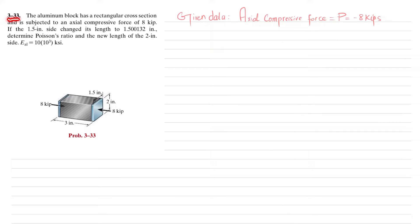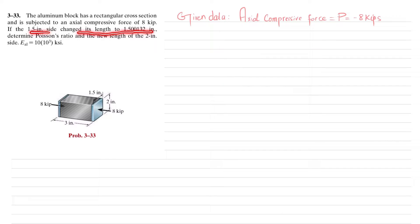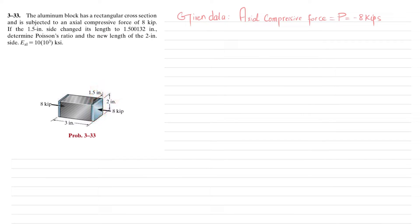Welcome back, problem 3.3. An aluminum block has a rectangular cross section and is subjected to an axial compressive force of 8 kips. If the 1.5-inch side changes its length to 1.500132 inches, determine the Poisson's ratio and the new length of the 2-inch side. The aluminum block has a cross section of 1.5 inches, a height of 2 inches, and a length of 3 inches.